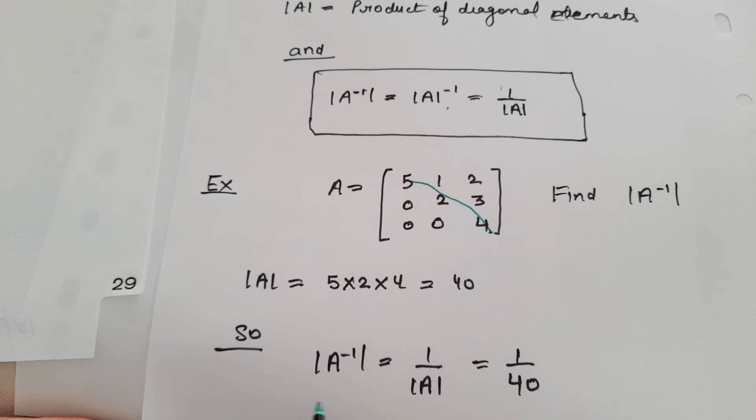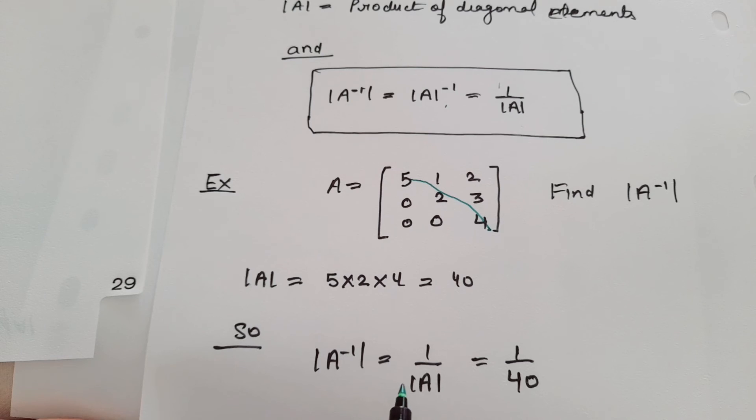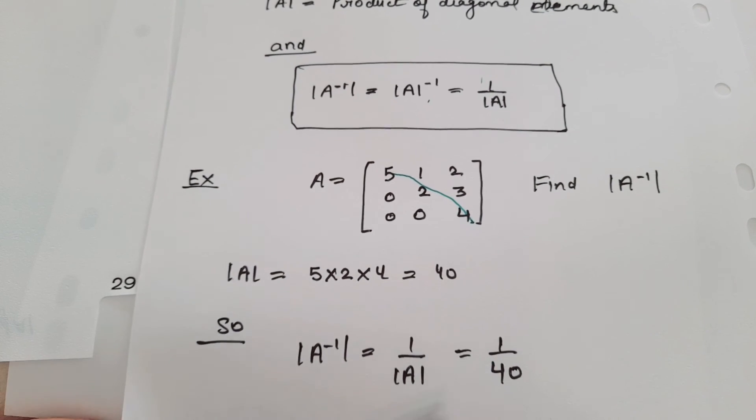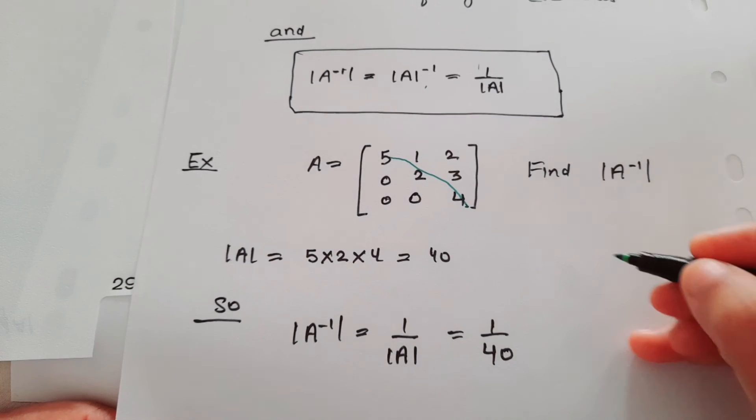Product of diagonal elements is 40. So determinant of A inverse will be equal to 1 upon determinant of A, that is equal to 1 upon 40.